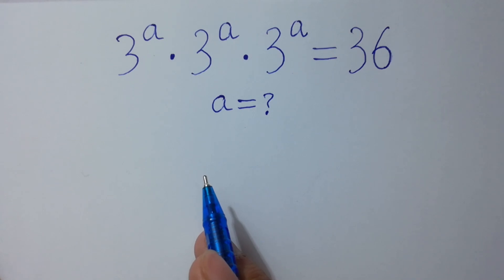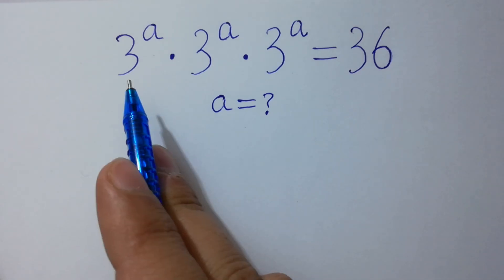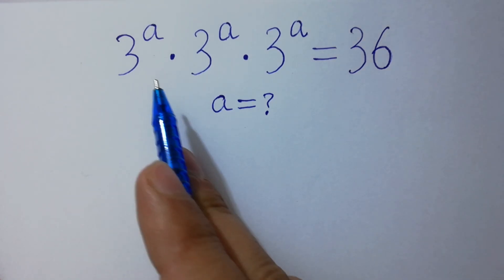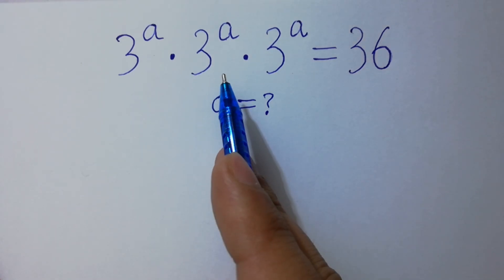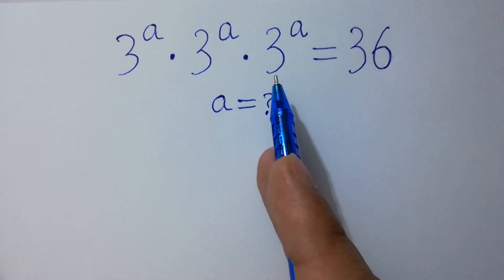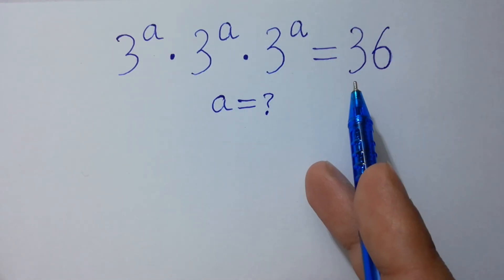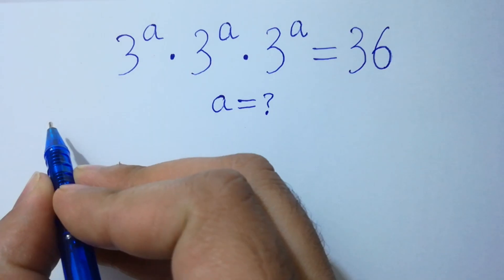Hello friends. Find the value of a if 3 to the power a times 3 to the power a times 3 to the power a equals 36. Let's have a solution.